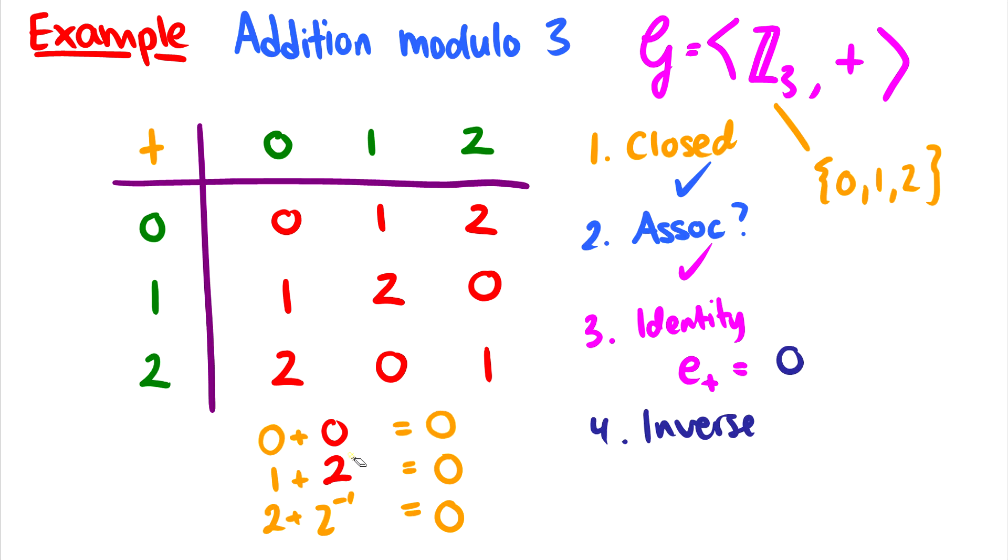And if we have a 2, what takes us back to 0? Well, 1 takes us back. So every element has an inverse. The inverse of 0 is 0, the inverse of 1 is 2, and the inverse of 2 is 1. Therefore, it has an inverse, it has an identity, it's associative, it's closed. So this is a group.